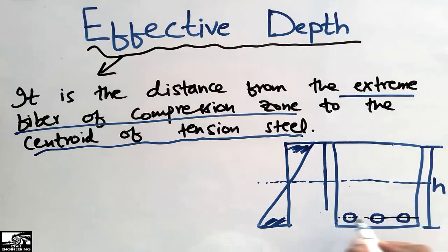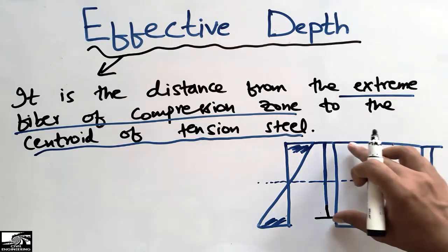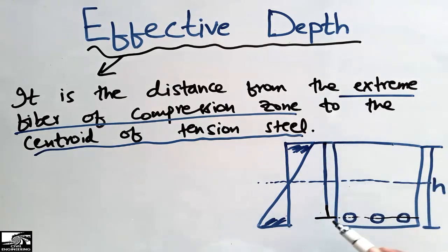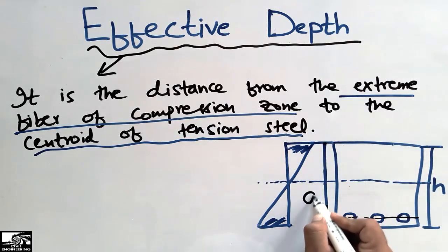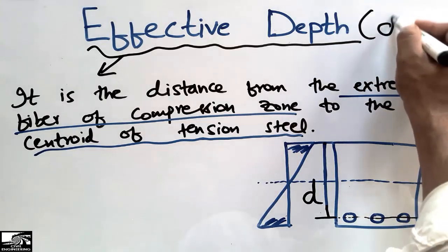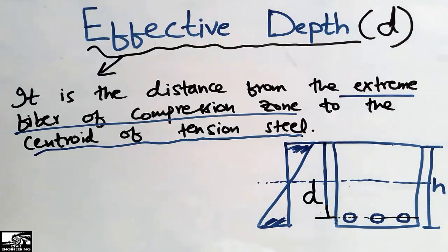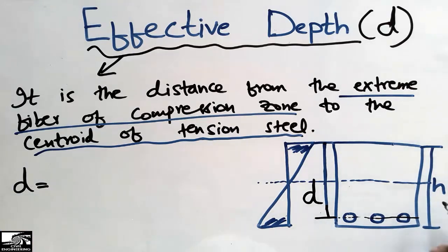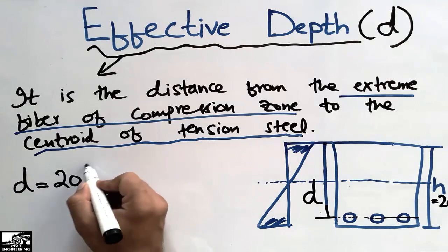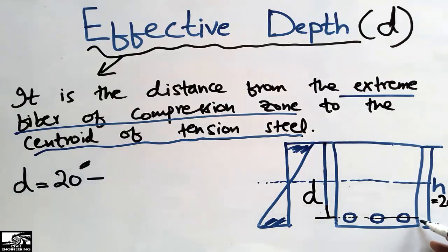The center of the reinforcement is the middle point of the bar. This distance from the top of the compression zone to the centroid of the tension steel is called the effective depth, represented by the small letter D. To calculate it: effective depth D equals the total depth of the beam. Let's suppose the total depth is 20 inches.